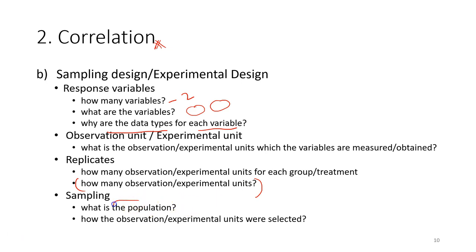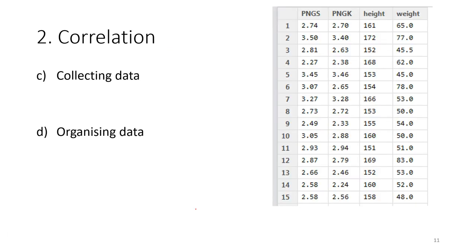We have to determine the population, and only then can we select the experiment unit or collect data from the observation unit. Each of these needs to be explained in detail before you collect the data, right after you have your research questions.